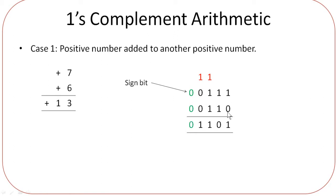Now you are going to add these numbers. We have already seen how to add in the binary addition video. Cases like 1 plus 0 is 1; 1 plus 1 is 10, so sum is 0 and carry is 1, which moves to the next digit. So 1 plus 1 plus 1 is 11 — put sum 1 down and carry 1 to the next digit. Then 1 plus 0 plus 0 is 1 again. There are no more 1s, so the sign bit remains 0. You get 01101, which is the positive number 13.